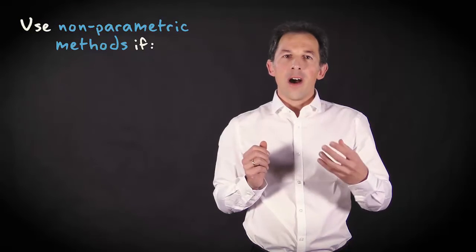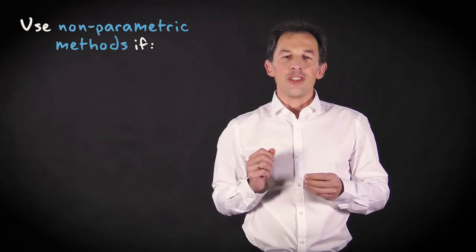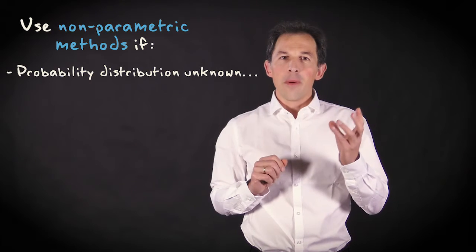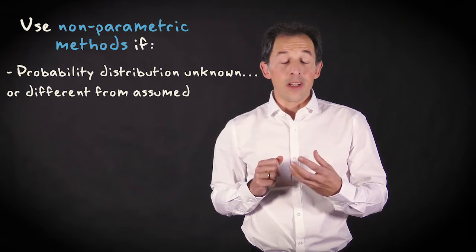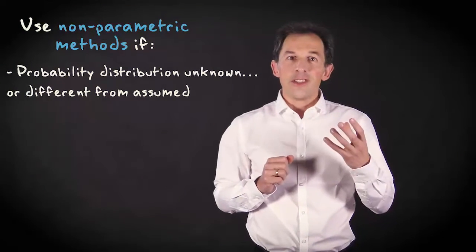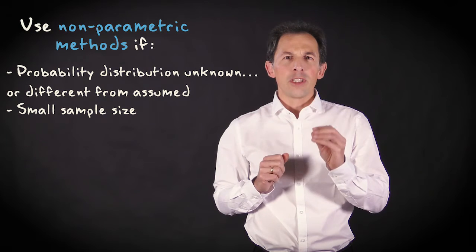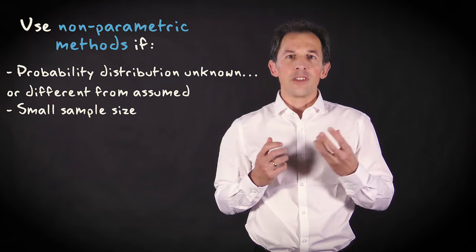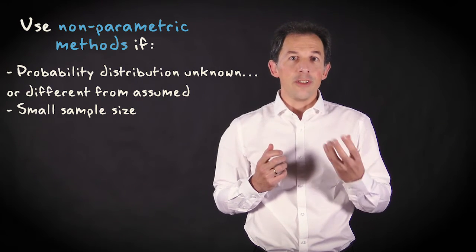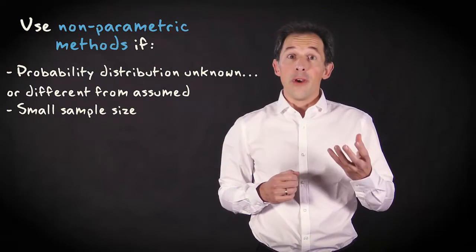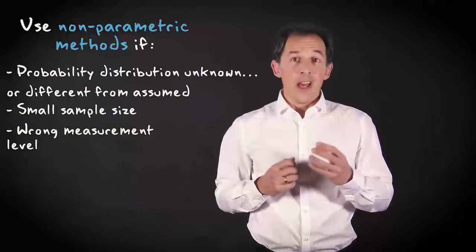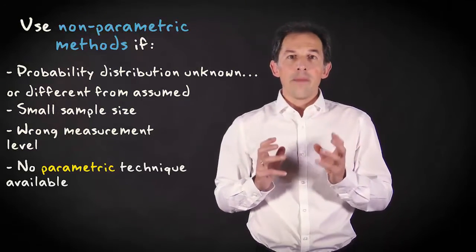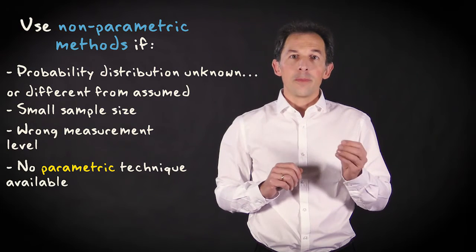Let me try to summarize. Non-parametric methods are advantageous in four situations. First, the underlying probability distribution may be unknown or different from what a parametric method requires. Second, the sample size may be very small so that it's impossible to test whether parametric assumptions are met, while violation of these assumptions may have severe effects. Third, the measurement level may fall below what is required for a parametric technique. And finally, there may be no parametric technique available at all for the specific question at hand.